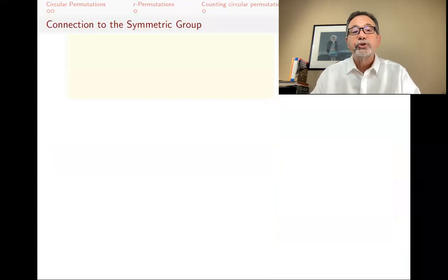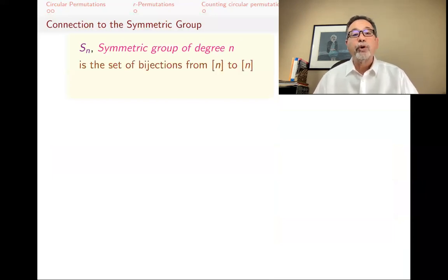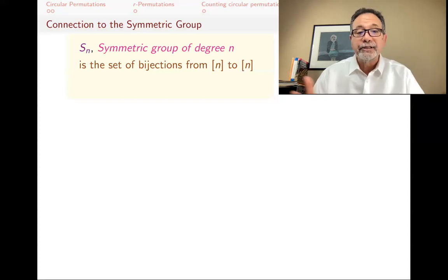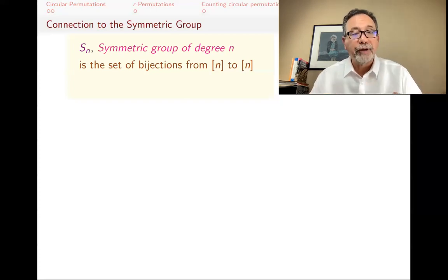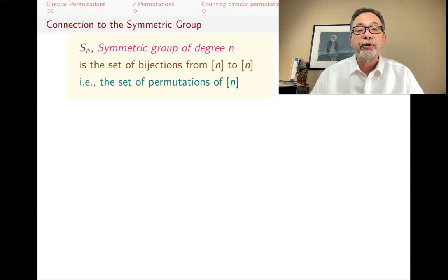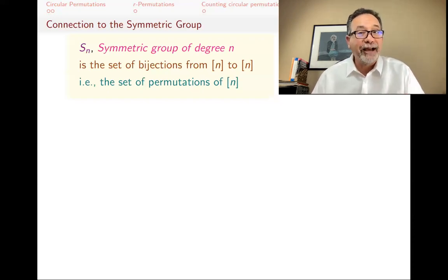Finally, let me give a quick connection to the symmetric group and to group theory. S_N is called the symmetric group of degree N, and it is simply the set of all one-to-one onto maps — bijections — from {1,...,N} to {1,...,N}. This is the same as the set of permutations of N: when you have a bijection from N to N, you're saying where every element goes, giving another permutation of N. So S_N has N factorial elements.